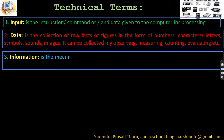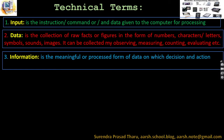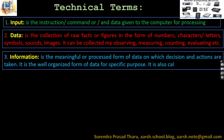When data is organized in a proper way with some specific purpose, it changes into something meaningful — that is known as information. Information is a meaningful or processed form of data on which decisions and actions are taken. It is the well-organized form of data for a specific purpose. It is also called the result or output.